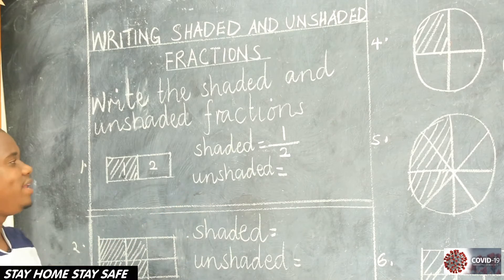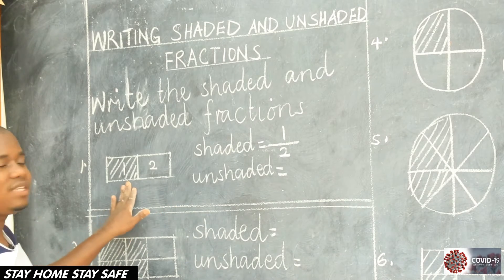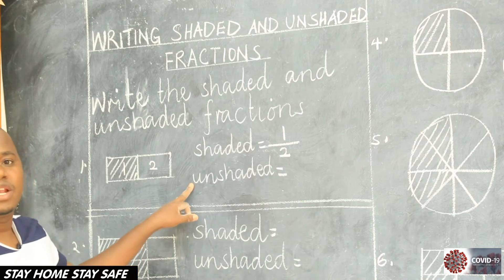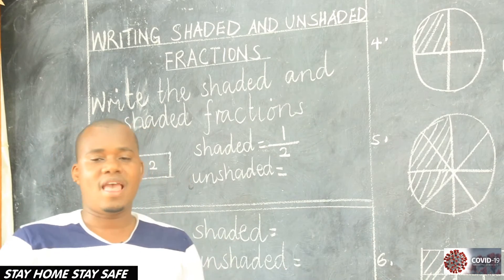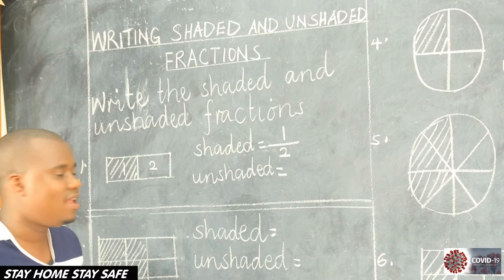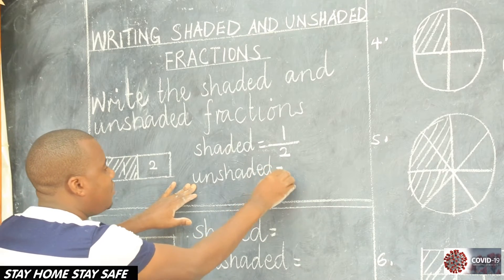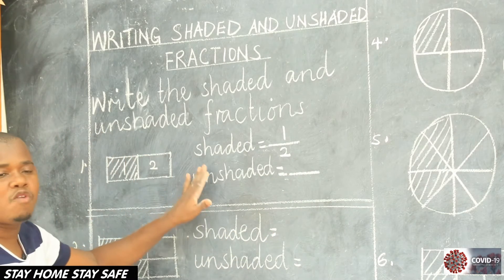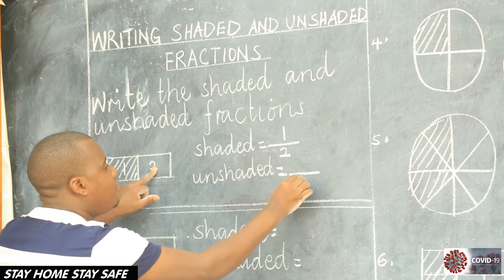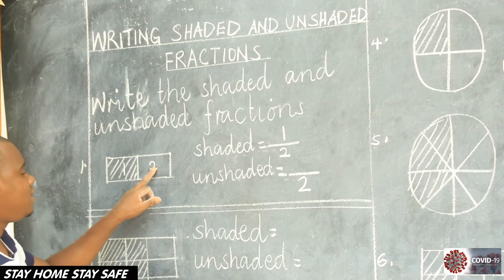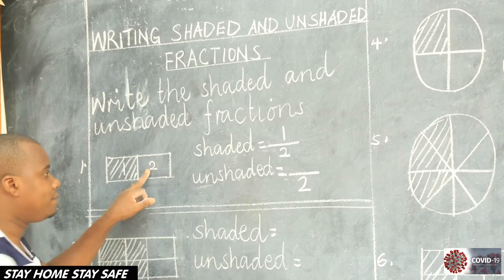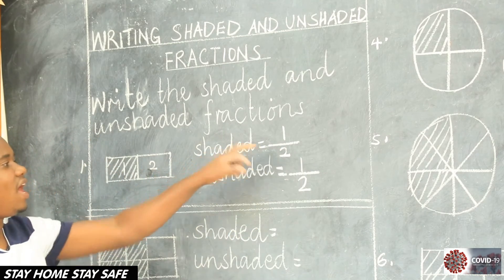You can see our number one is drawn and some part is shaded and another is not shaded. So how do we write that fraction? First of all, the fraction has two parts: the numerator and the denominator. Now, which is supposed to be the numerator and which one is supposed to be the denominator? Count the number of parts in the whole diagram, and the number of parts in the whole diagram will give us the denominator.